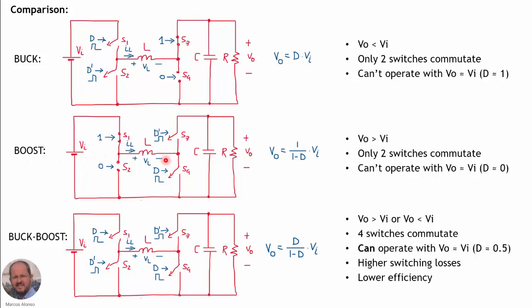For the boost converter, the output voltage is always higher than the input voltage, and again only two switches commutate. Similarly, this converter cannot operate when output and input voltages are very similar because the required duty cycle would be very close to 0. For the buck-boost converter, all four switches commutate, so we expect lower efficiency due to switching losses in all four switches.